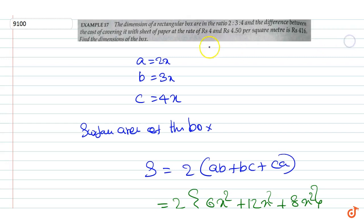Therefore, the dimensions are: a equals 2 into 4 equals 8 meters, b equals 3 into 4 equals 12 meters, and c equals 4 into 4 equals 16 meters. These are our answers.